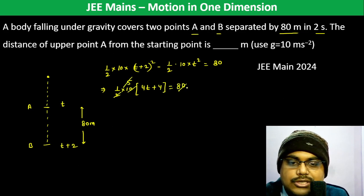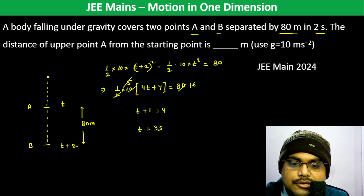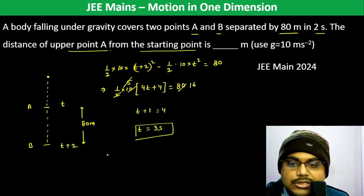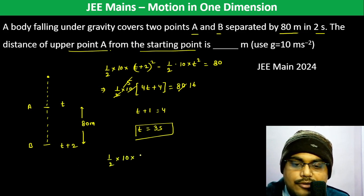This is 5, this goes as 16, then T plus 1 equals 4, so T is 3 seconds. The distance of upper point A from the starting point is half into 10 into T square, which is 9, so 5 times 9 equals 45 meters.